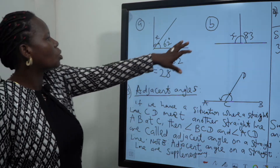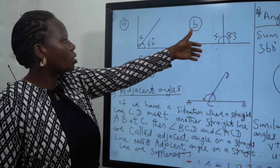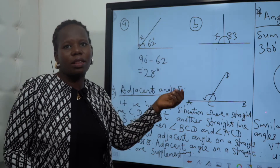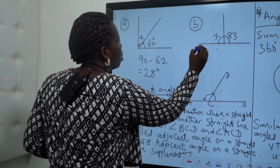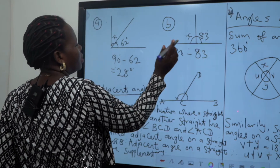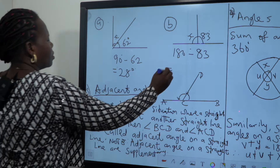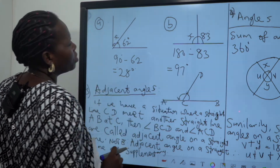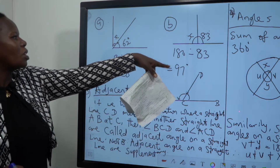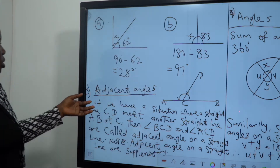Coming to the next question: find the value of x where x and 83 degrees are on a straight line. Since the angle on a straight line is 180 degrees, you do 180 minus 83, which gives us 97 degrees. So x equals 97 degrees. If we sum them, they give 180 degrees — this is a supplementary angle, while the previous one was a complementary angle.